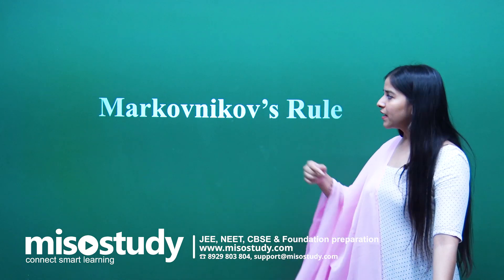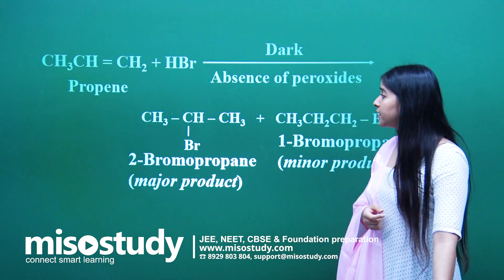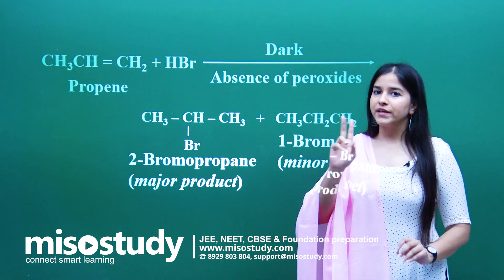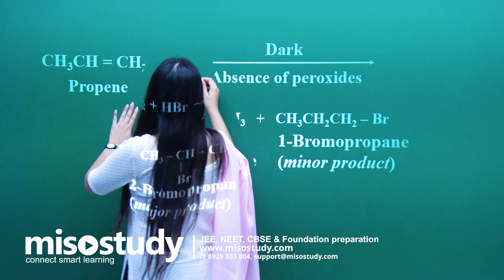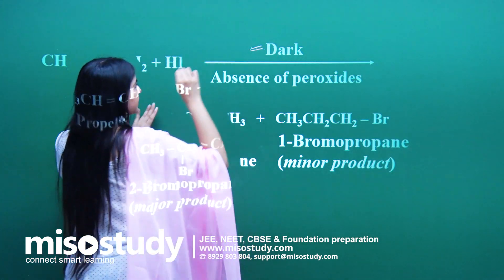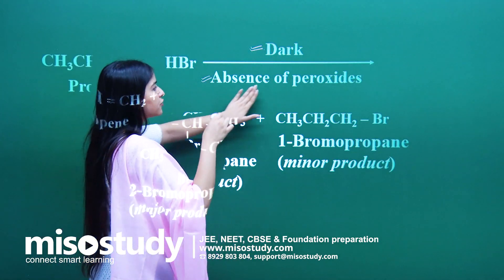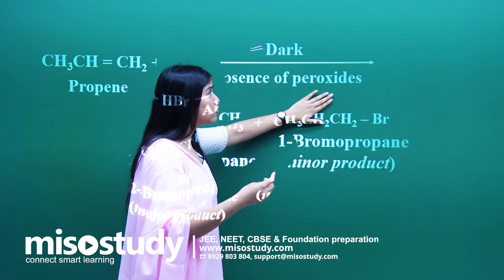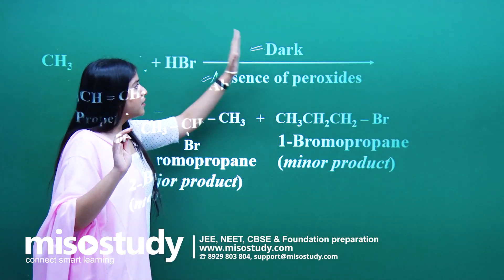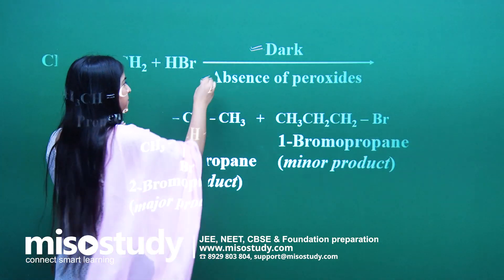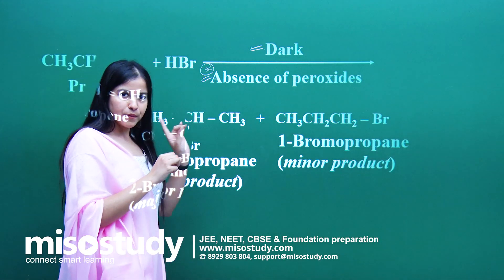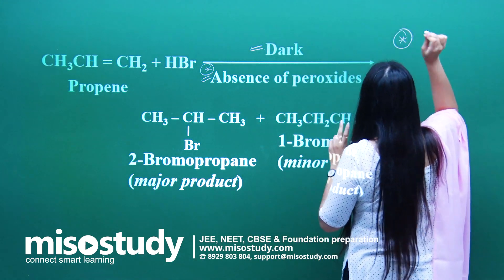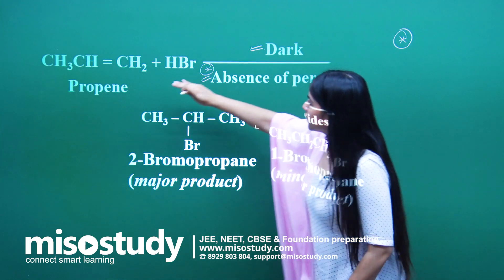So Markovnikov's rule — named after the scientist who discovered it. There are two very important things to remember. Markovnikov's rule happens in the dark, that is, in the absence of peroxides. Any kind of peroxide — usually benzoyl peroxide is taken — but in Markovnikov's rule, it always occurs in the absence of peroxide.